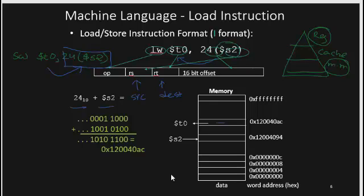The I-type deals with complex instructions like loading, storing, and branching. Loading and storing means loading data from memory into registers and storing data from registers into memory. LW and SW signify load and store instructions respectively.